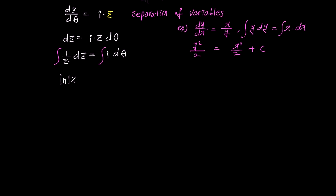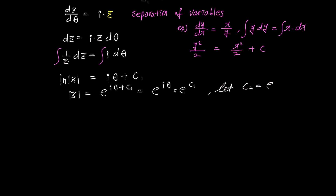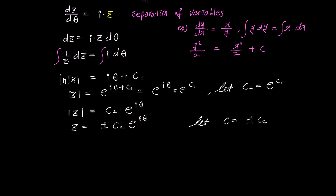The integral of 1 over z is ln of the modulus of z, and the right side becomes i times theta plus c₁, where c₁ is the constant of integration. Removing the logarithm, modulus z becomes e to the power of i theta plus c₁. Expressing the exponential as a product, we get e to the power of i theta times e to the power of c₁. Since e to the power of c₁ is a constant, writing it as c₂, modulus z becomes c₂ times e to the power of i theta. Removing the absolute value, z equals plus or minus c₂ times e to the power of i theta, and since plus or minus c₂ is an arbitrary constant, we simply write z equals c times e to the power of i theta.